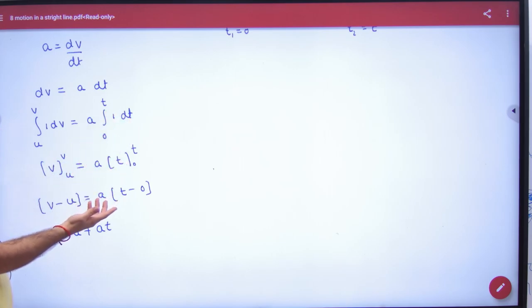And the integration of dt is t, from 0 to t. One time v of upper limit, one time v of lower limit: v minus u. One time t of upper limit, one time lower limit. So v is equal to u plus at.